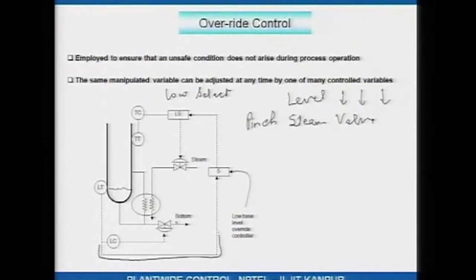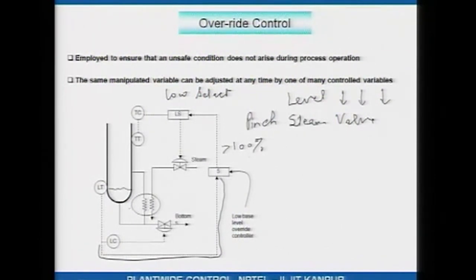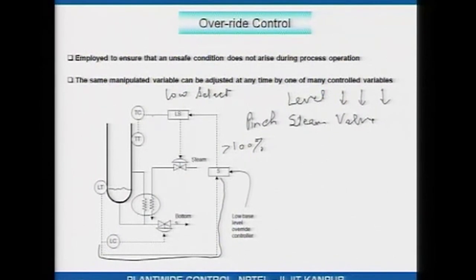Ordinarily the steam valve is moved to hold a tray temperature constant, but should the level go below a threshold and continue to go down, you would like the steam to come under level control. This is implemented as follows: here is the level signal. You multiply the level — say level is 50 percent — by 5. If the level is not too low, this signal will usually be greater than 100 percent. If the level goes down to 20 percent, 20 percent times 5 is exactly 100 percent. If the level further goes below 20 percent, this signal will go below 100 percent.